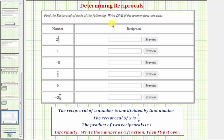We want to find the reciprocal of each of the following and write DNE if the reciprocal does not exist.